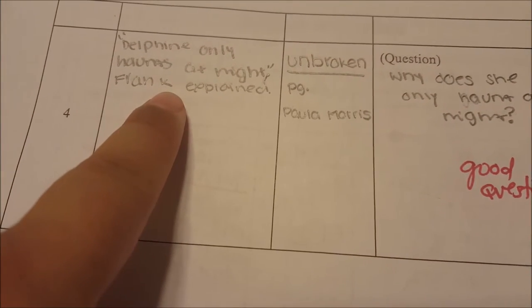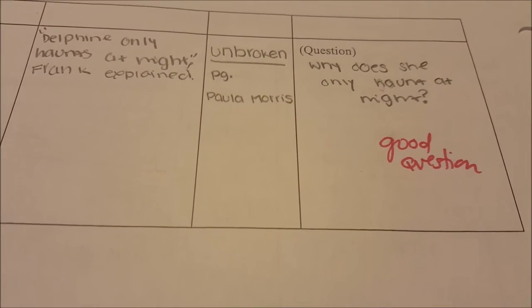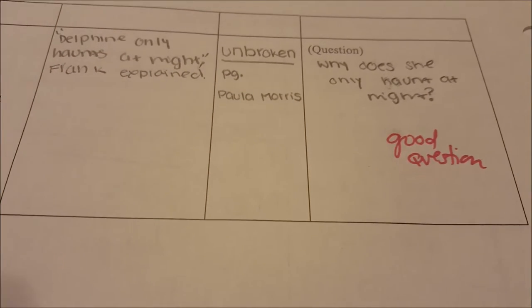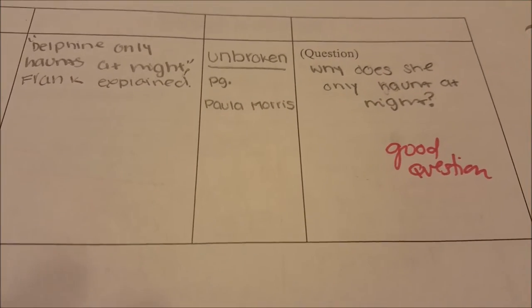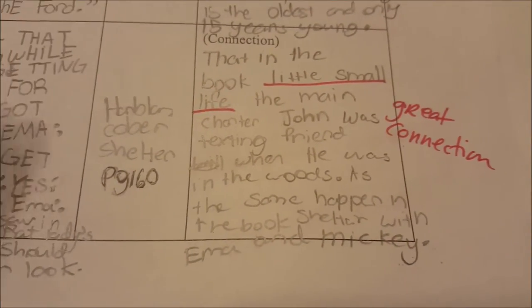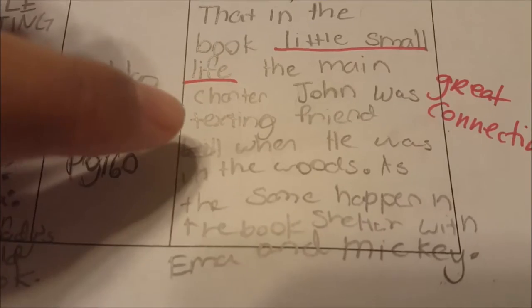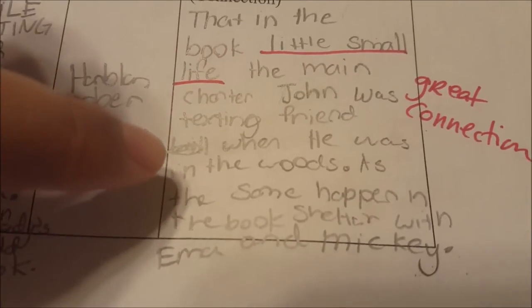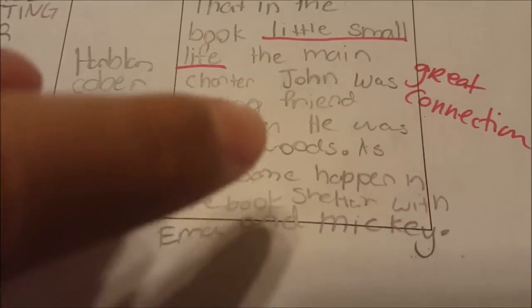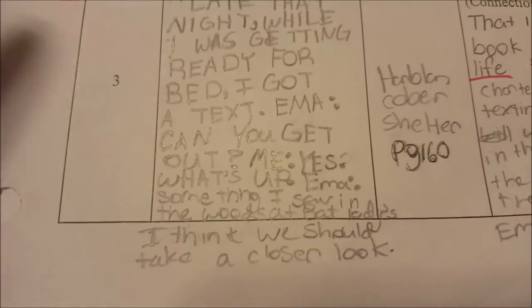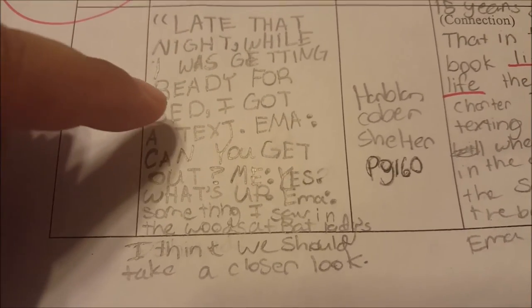Here's a great question: 'Why does she only haunt at night?' Delfina only haunts at night — and you want to know why that would be. That is a great question because there's more than one acceptable answer. You have to dig deep into the text to get it; it's not a yes or no question, not just a one-word response. Great job. And here's another wonderful text-to-text connection where the student uses her book and connects it to a book called 'Little Small Life,' noting that the main character in that book was texting friends when he was in the woods — just as is happening in the book she's reading. Great connection.